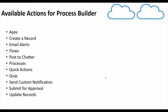Immediate actions execute as soon as the criteria for a record is satisfied. Scheduled actions can be scheduled for a particular time to be executed. The available actions in Process Builder include: execute an Apex method, create a record, send email alerts, launch a flow, post to Chatter, launch another process, fire a quick action, send a custom notification, submit a record for approval, and update a particular record.